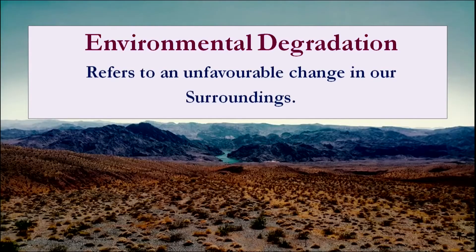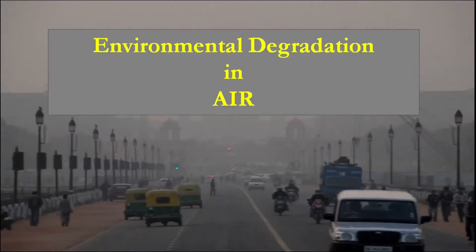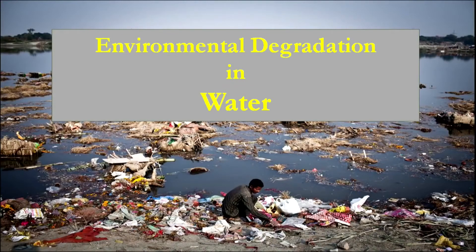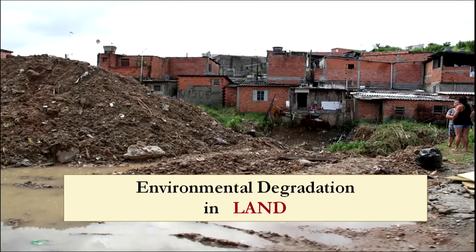Now what is environmental degradation? It refers to any kind of unfavorable change in our surroundings. Environmental degradation can occur in air, land and water. Here is a picture showing smog in a city which depicts environmental degradation in air. Here is a picture depicting environmental degradation in water, and here is a picture of industrial waste being discharged into a water body showing environmental degradation on land.